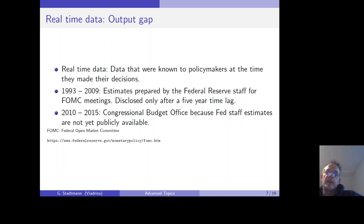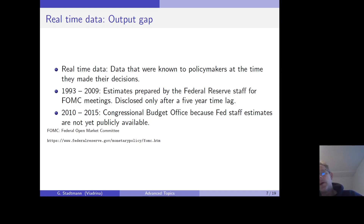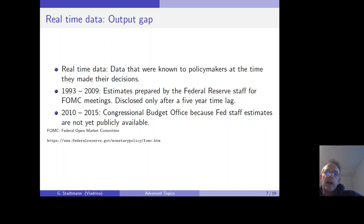Therefore Bernanke uses data from the Congressional Budget Office, because the information from the Fed staff meetings is not publicly available. This already points to a problem: the public does not have the same information set as the Federal Reserve, and therefore it is problematic whether the public can hold the Fed accountable, since the information sets are completely different. I'll come back to the real-time data issue later on.